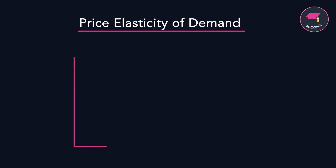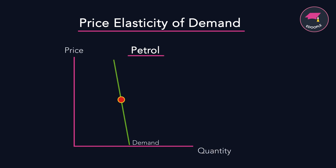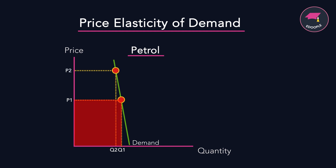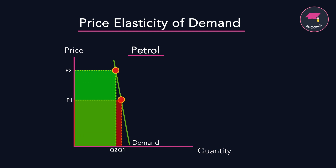Sometimes it's easier to look at a particular product — let's look at petrol. Petrol is price inelastic, which means a large change in price will only produce a small change in the quantity demanded. We can show that by the area in red and then the area in green. So increasing prices would be the right course of action for this producer.